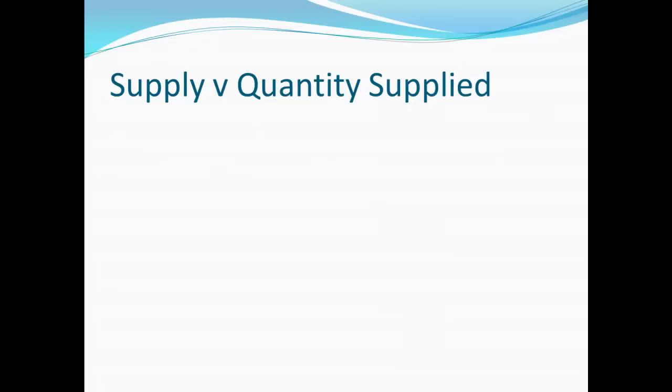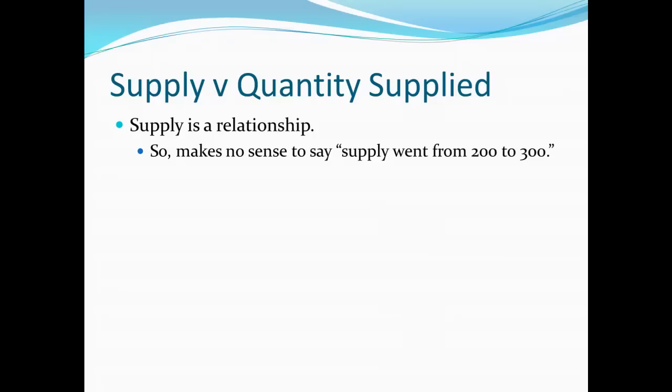Another important distinction is between supply and quantity supplied. Supply always describes a relationship between prices and quantities. That being the case, it doesn't make any sense to say that supply went from $200 to $300. Neither $200 nor $300 are a relationship. Any time we say, for example, that supply changes, it means that a relationship changed. Not just the number provided, but the relationship between prices and quantities that are provided for sale at those prices changed.